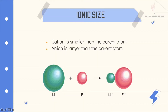For ionic size, we compare the ion and the parent atom's size. A cation is smaller than the parent atom, while an anion is larger than the parent atom. For example, the lithium atom is larger than the lithium ion (Li⁺). Li⁺ is a cation, so it is smaller than the parent atom. For an anion, for example, the fluoride ion is larger than the fluorine atom.